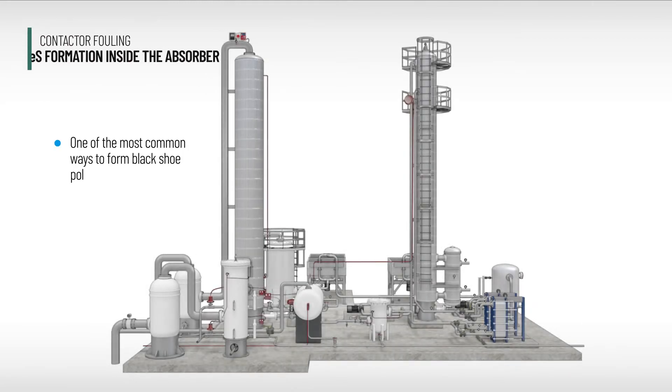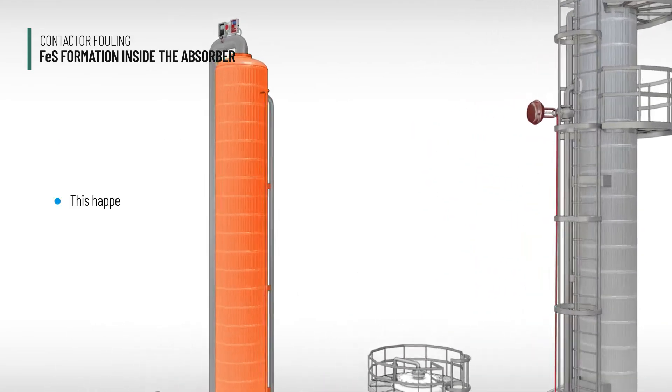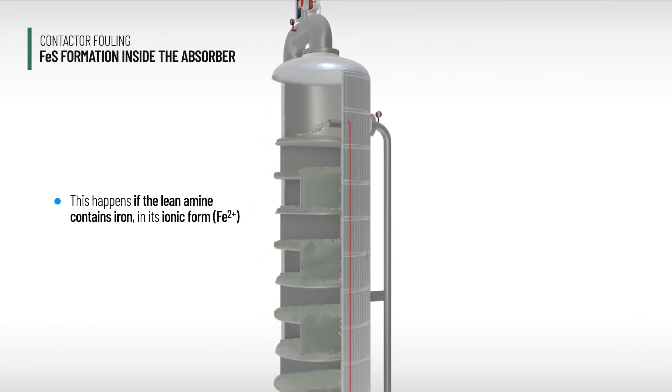One of the most common ways to form black shoe polish is if iron sulfide is formed inside the absorber. This happens if the lean amine contains iron in its ionic form, Fe2+. This is a soluble form of iron that is not visible.